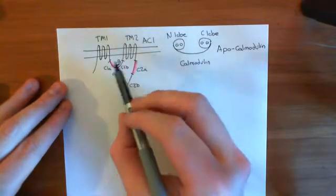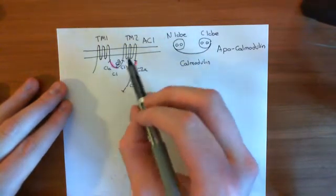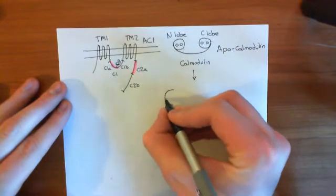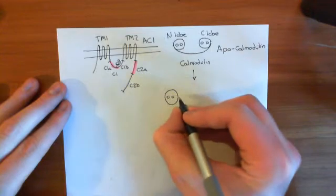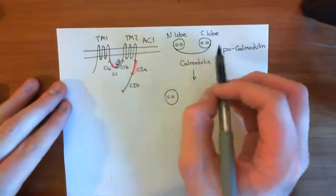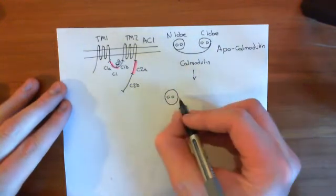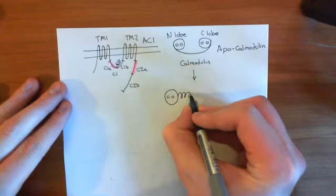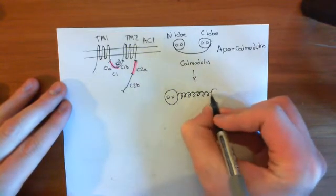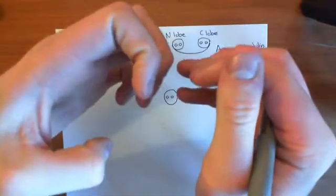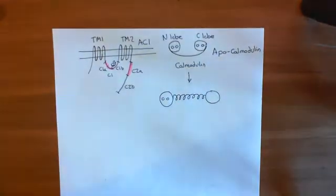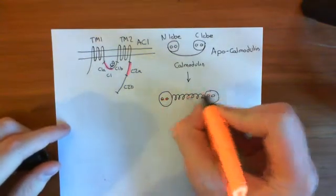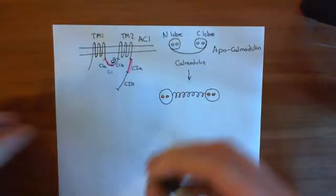Apocalmodulin binds to the C1B portion of adenylyl cyclase 1. When calcium binds to those four calcium binding domains of apocalmodulin, you get the calcium-calmodulin complex forming. This changes the conformation of calmodulin: the lobes move further away, and what was a linear polypeptide connecting the two lobes now takes on an alpha-helix structure — basically a spring-like structure between the two lobes, which are now as far apart as they can possibly be.